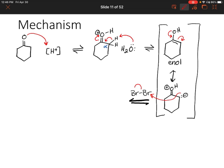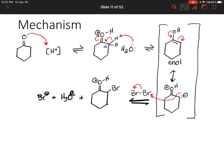That negatively charged carbon will grab onto a bromine, and it can do that due to an instantaneous dipole that exists between those bromine atoms — so we see a partially positive bromine and a partially negative bromine. We have now added a bromine onto our alpha position. We've also formed H3O+ from a previous step, and a bromide ion which could potentially grab onto that hydrogen on the oxygen, giving us a neutral oxygen.